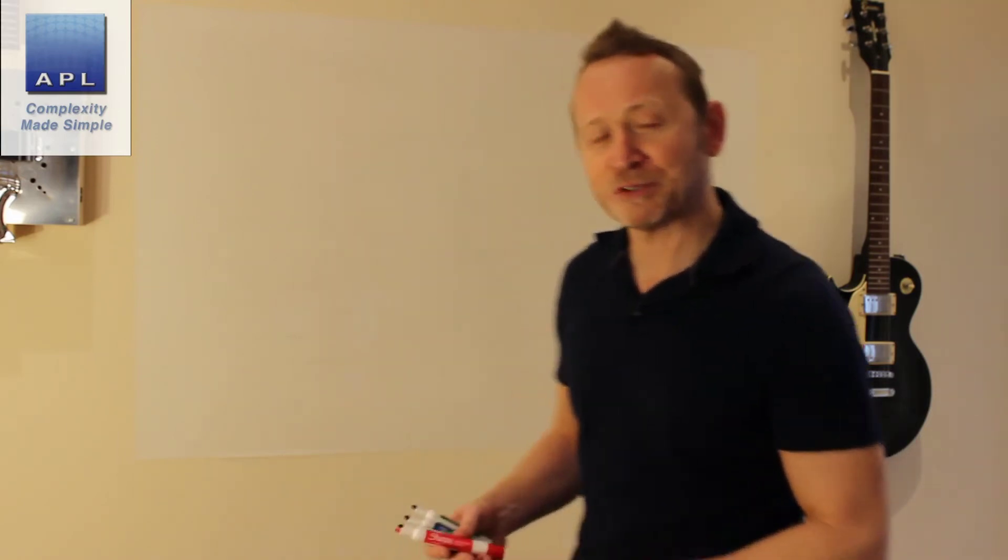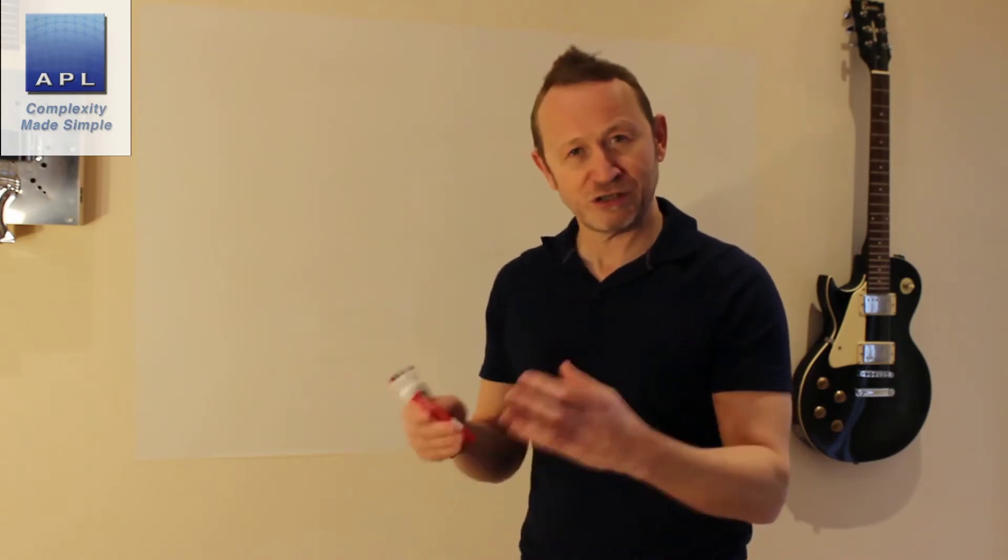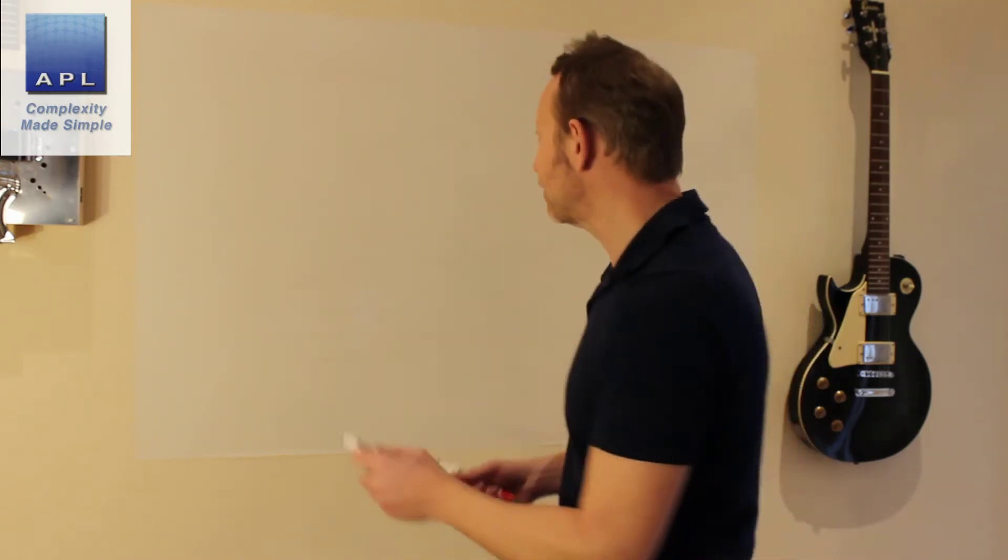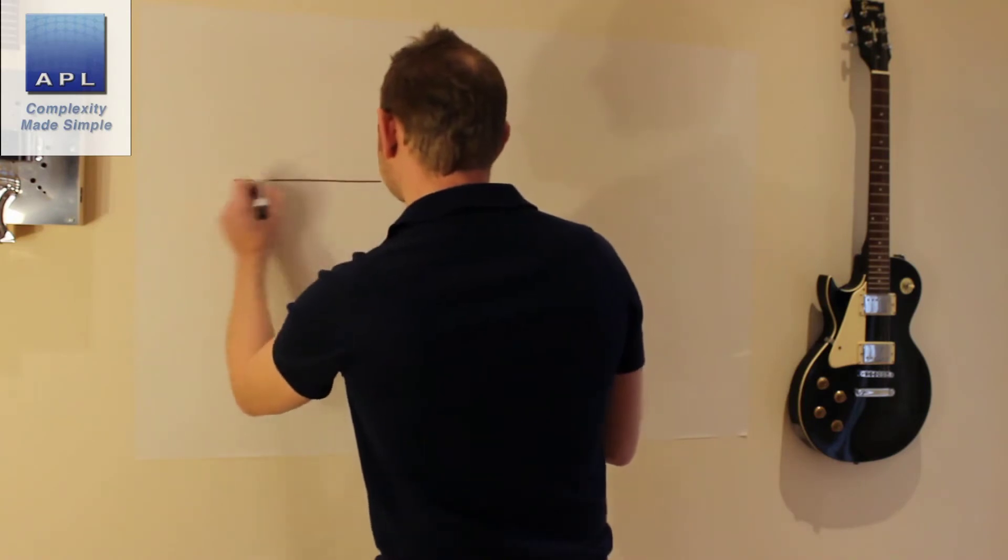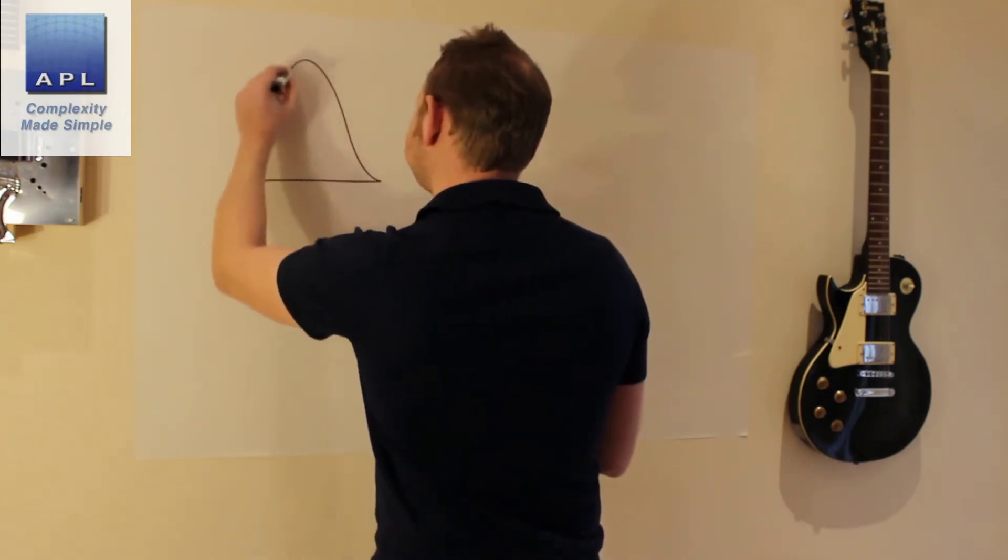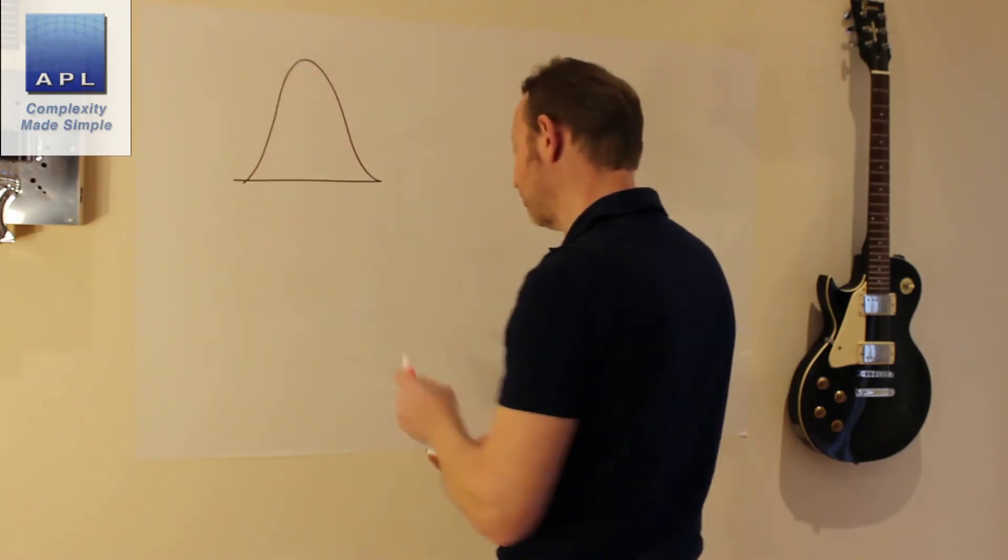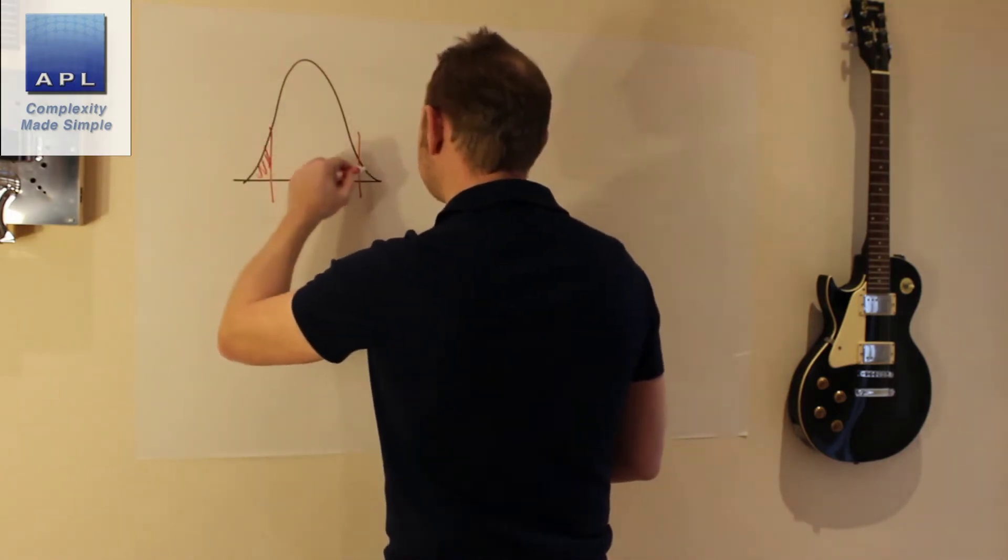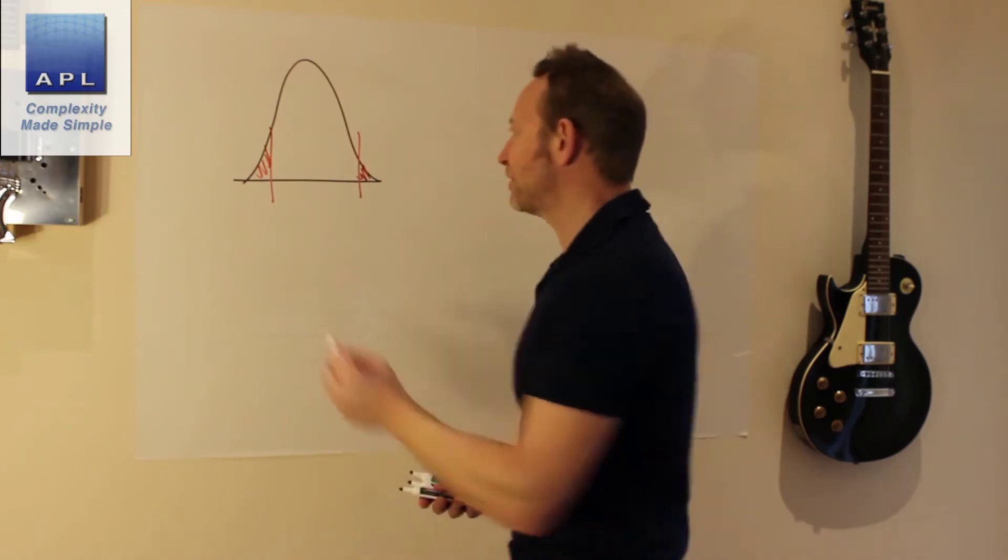Typically what's going to happen: you've designed a product, you've designed a process. The performance of that product and process is locked in by all the decisions you've taken. So in other words, you are going to get a distribution. Maybe you're going to get a distribution that looks like this. It's not particularly capable.